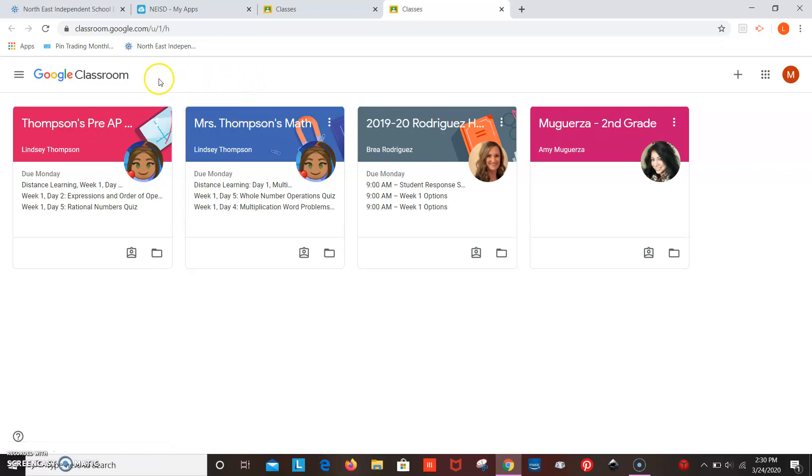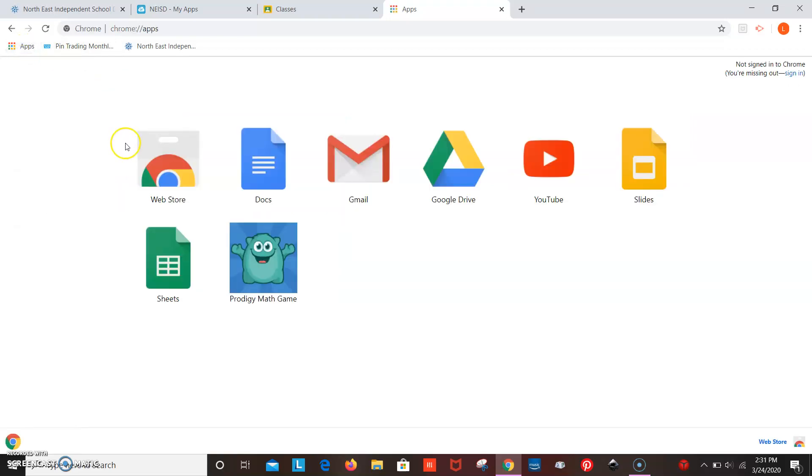What you need to do now is you need to go up in this corner where it says Apps and you must be in Google Chrome for this to work. So you have to be in Google Chrome for this to work. So you're going to go to Apps and down here at the very bottom it says Web Store. Click Web Store.